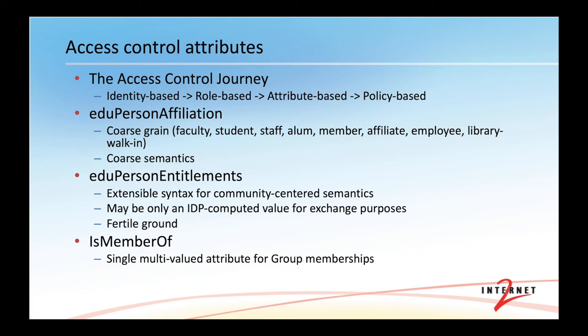One of the most important access control attributes is affiliation. We use it a lot in the library community and the content communities. It has coarse semantics. So we're looking increasingly at another attribute — eduPersonEntitlement — which can have a variety of values, and we're beginning to see thoughts in that space; it's very fertile ground. I should point out that an entitlement may not actually exist in the enterprise directory. It may be a computed value for transfer to the relying party by the IDP as part of the on-the-wire communication. Group memberships are very handy — that's how we manage a lot of attributes on the campus side — it's just a matter of figuring out how to make it a better vehicle for inter-institutional use.